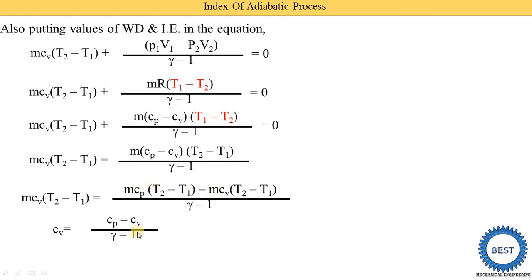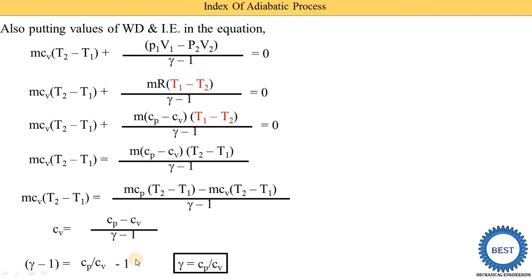On the left side we also have M·Cv·(T2 − T1), and on the right side M·(T2 − T1)·[(Cp − Cv)/(gamma − 1)]. The M·(T2 − T1) cancels from both sides, leaving Cv equals (Cp − Cv)/(gamma − 1). We then rearrange: Cv·(gamma − 1) equals Cp − Cv. Dividing through by Cv gives gamma − 1 = Cp/Cv − 1. The minus one cancels to plus one, and the final equation is gamma equals Cp divided by Cv.